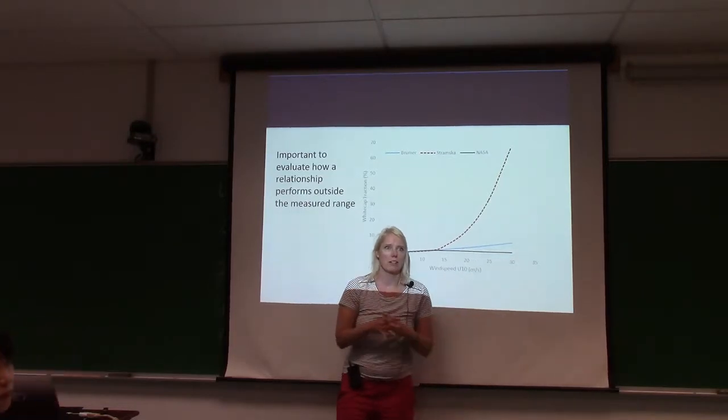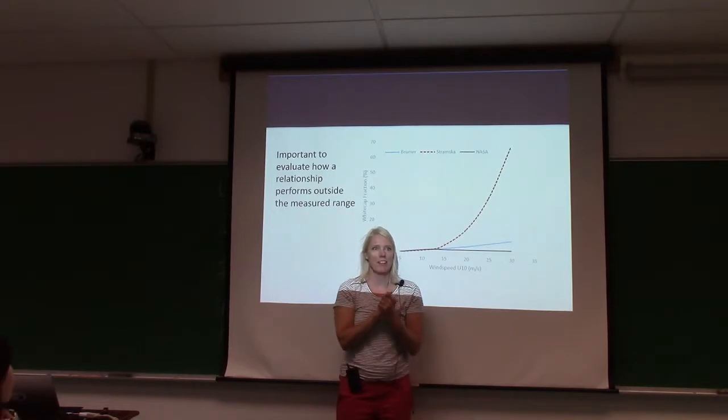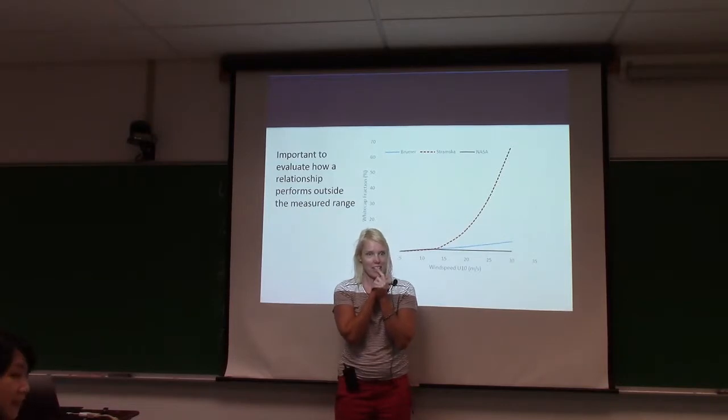This is the Stromska, which was measured under these conditions, which was kind of good. But you saw those Southern oceans, they get to these conditions and this is what that relationship. So obviously NASA said at this point, we're going to level it out and assume that there's no more whitecap fractions. It was Sean. There's two reasons for that. One, because that collection is crazy.